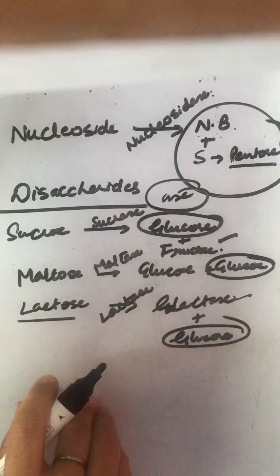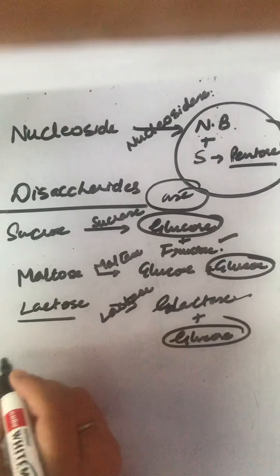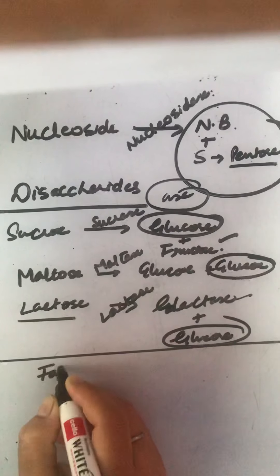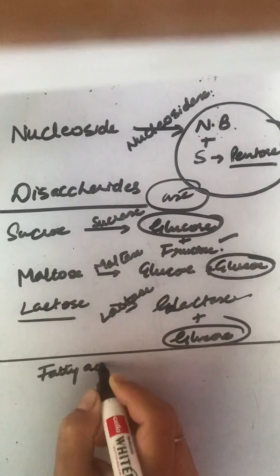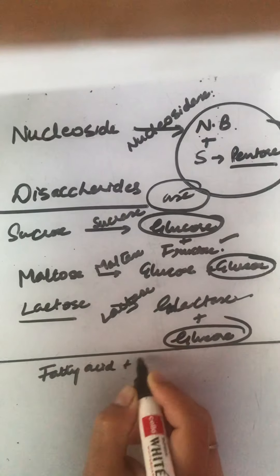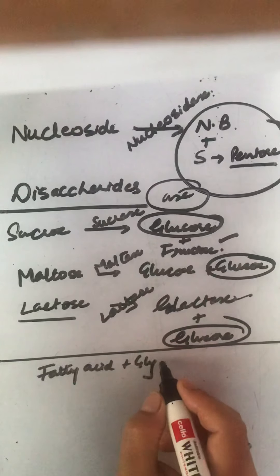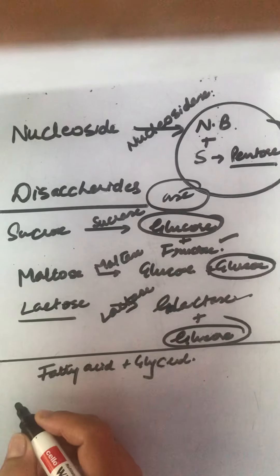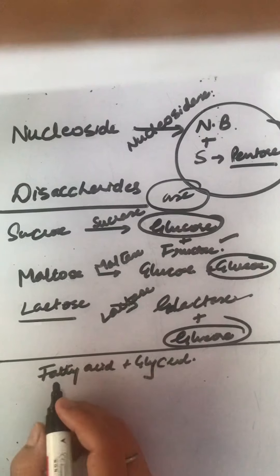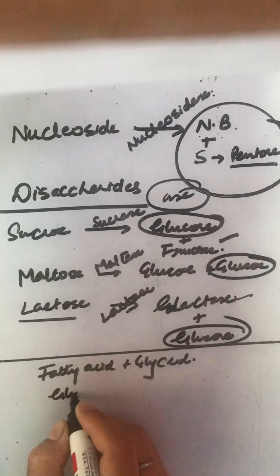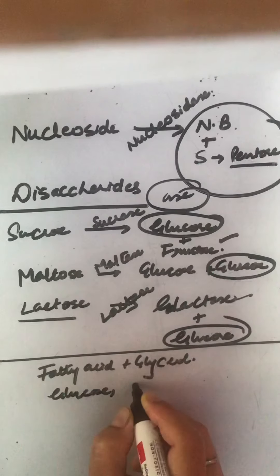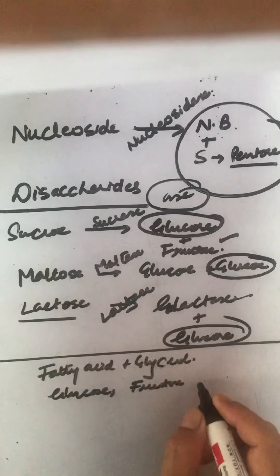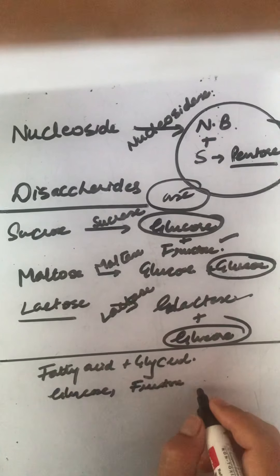Finally, the end products or final products of digestion are: fatty acids and glycerol, then glucose, fructose, as well as galactose.